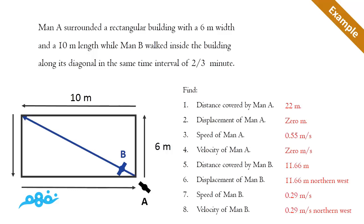Because the displacement is the change in position, and he returned back to his initial position, so he displaced zero meters. The speed equals the total distance covered in the time interval, which equals 0.55 meters per second.